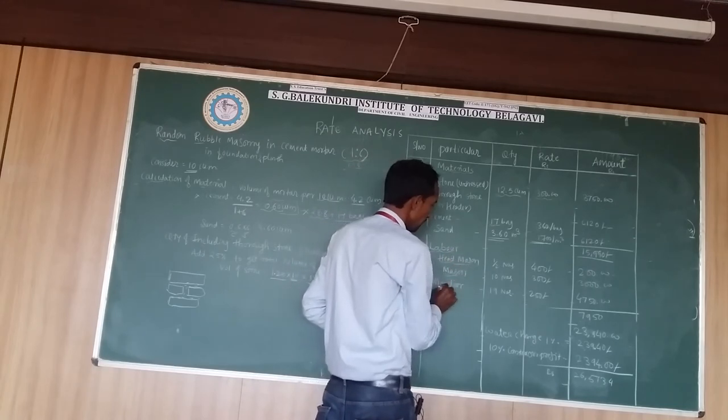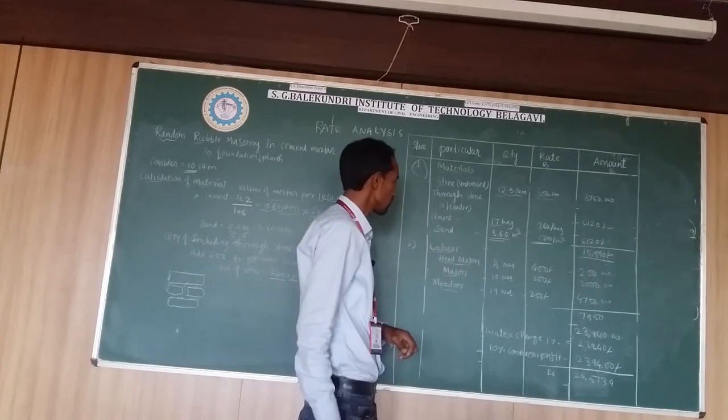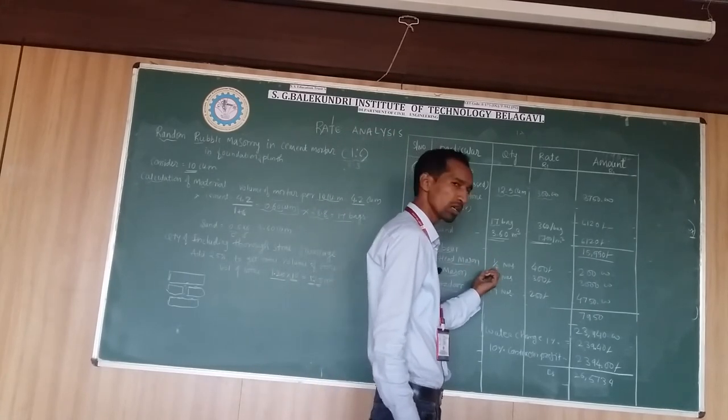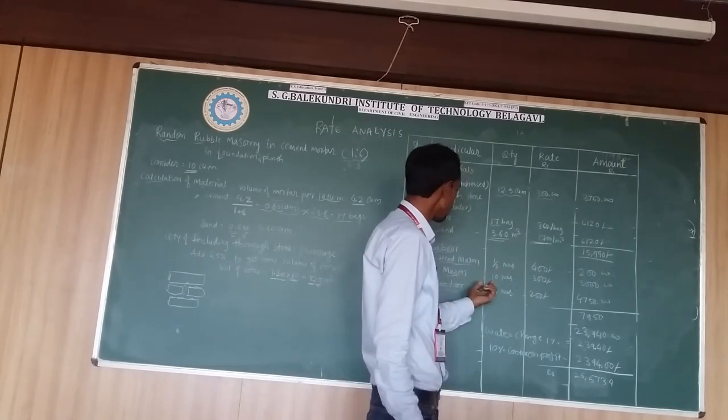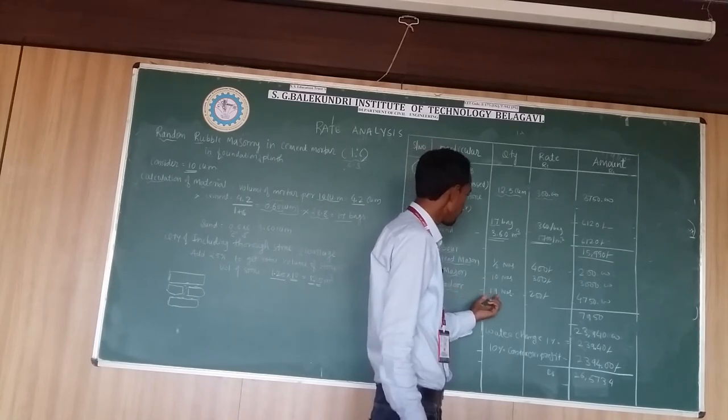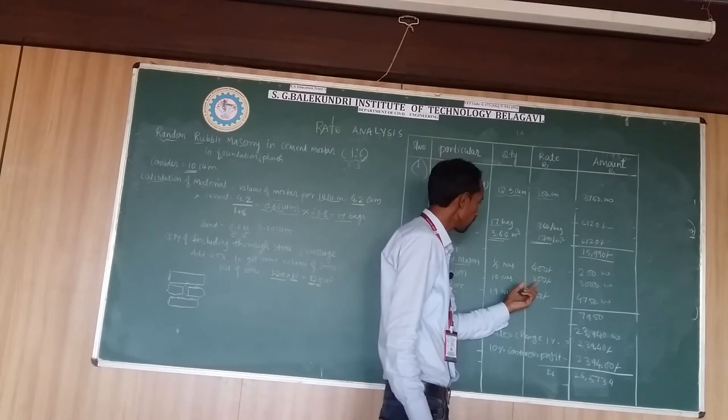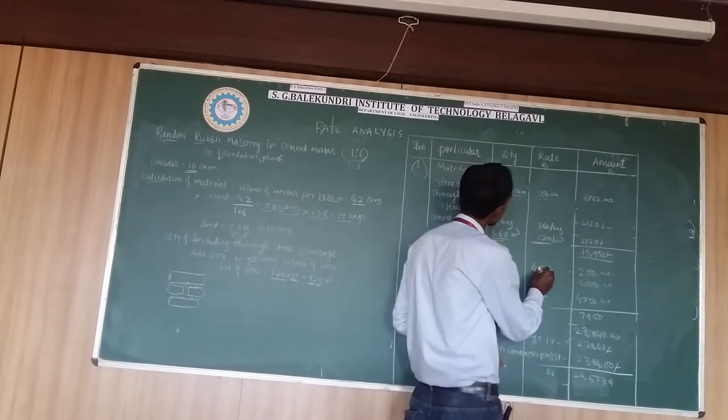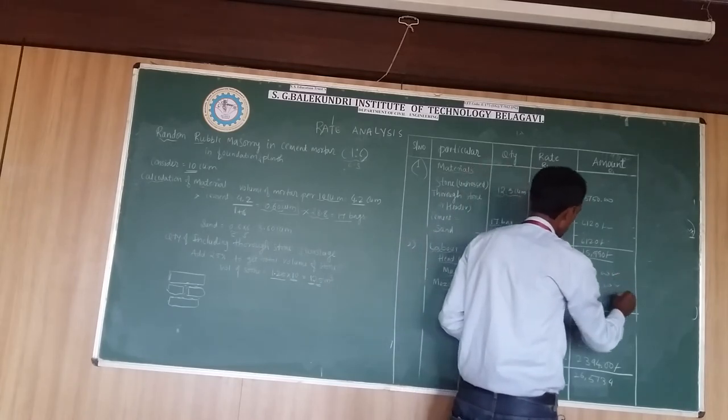Head mason, mason and masonry are required for construction of rubble masonry. It is half number means he can work for only half day. Mason masonry are 10 numbers. Masonry, female and male masonry are 19 numbers. Their rates are 400, 300 and 250. Multiply quantity or numbers versus rate, you will get the total amount here.